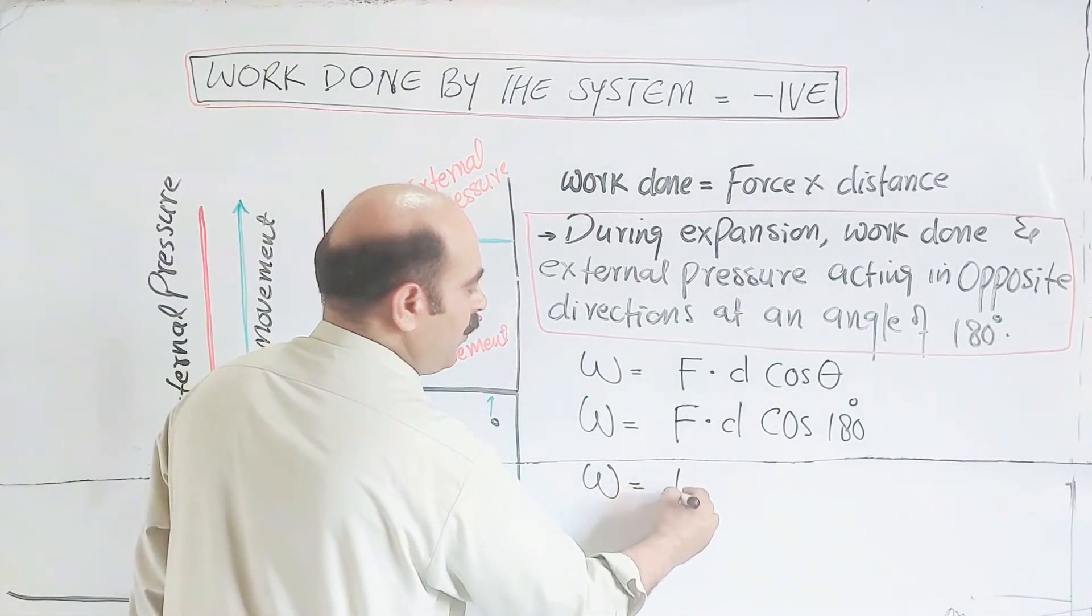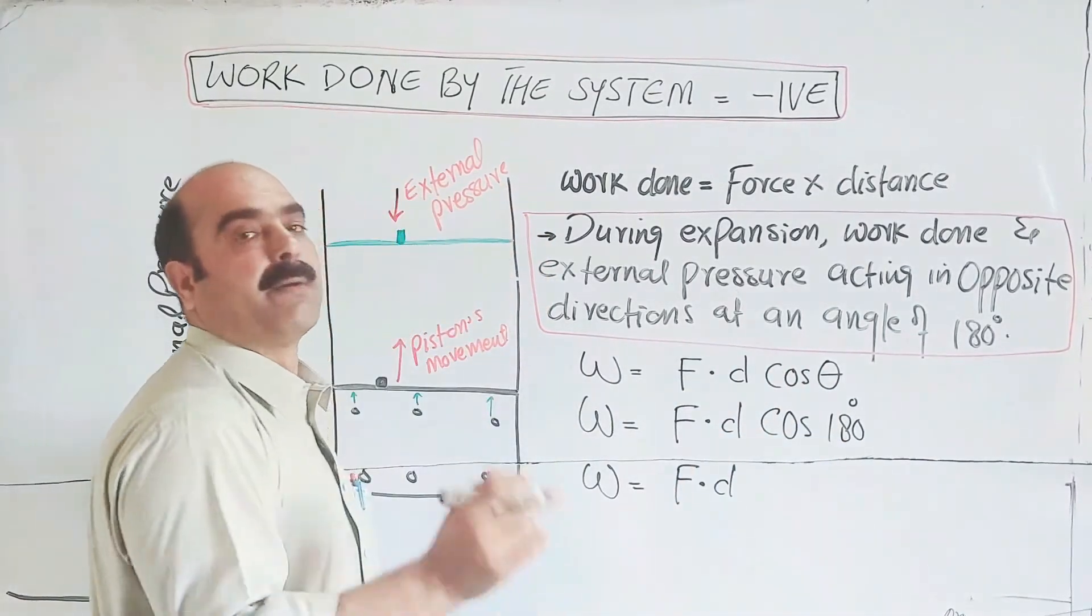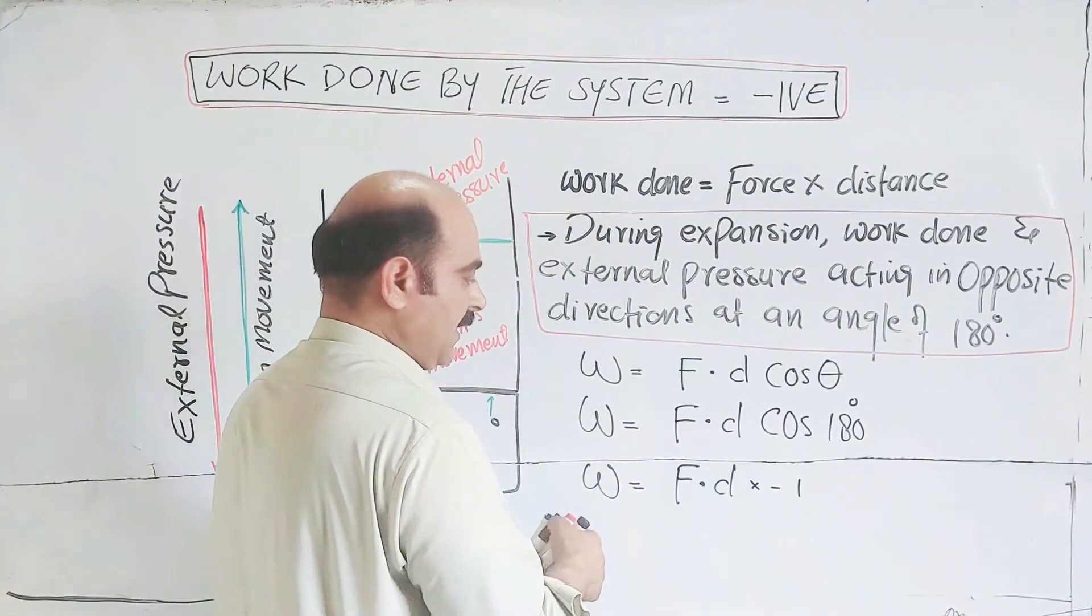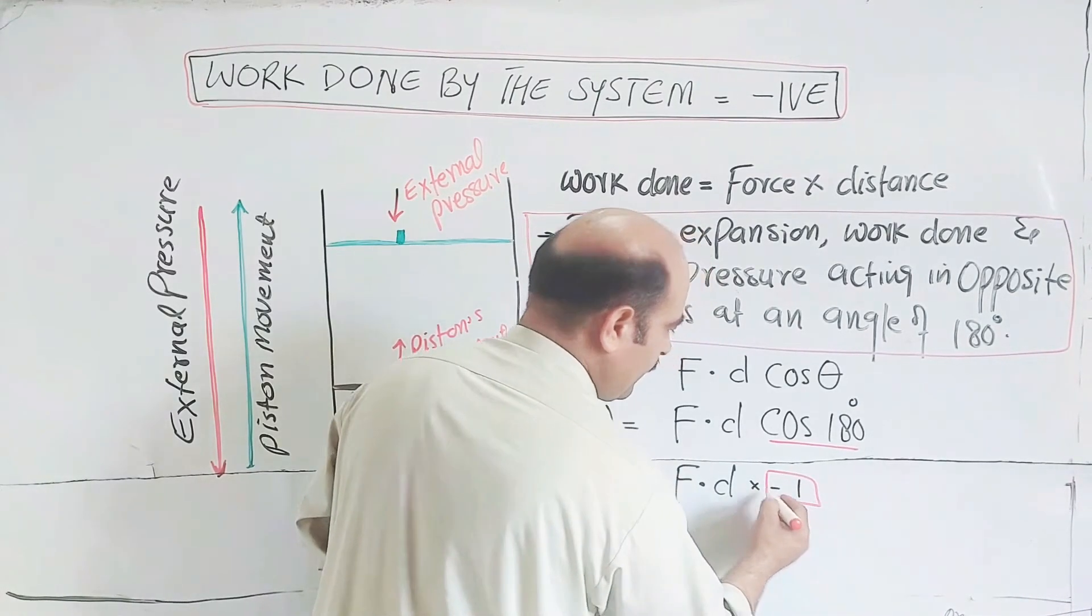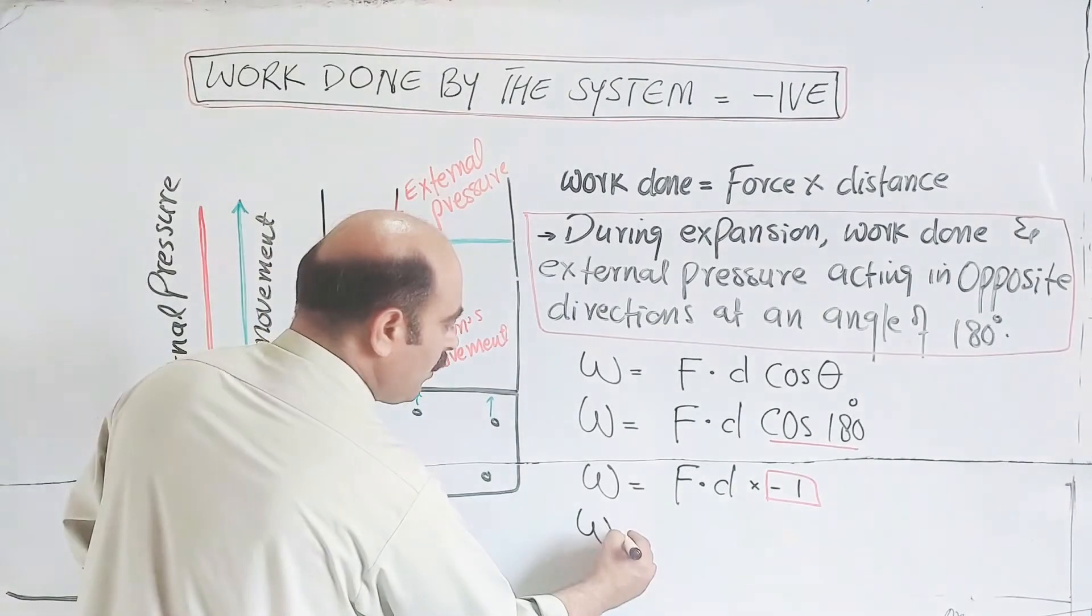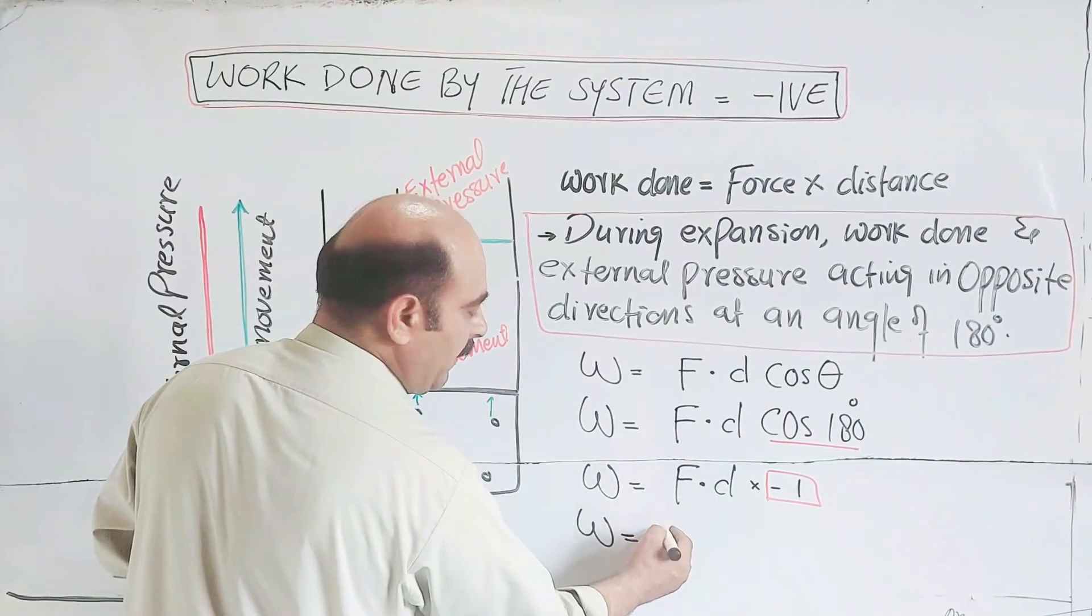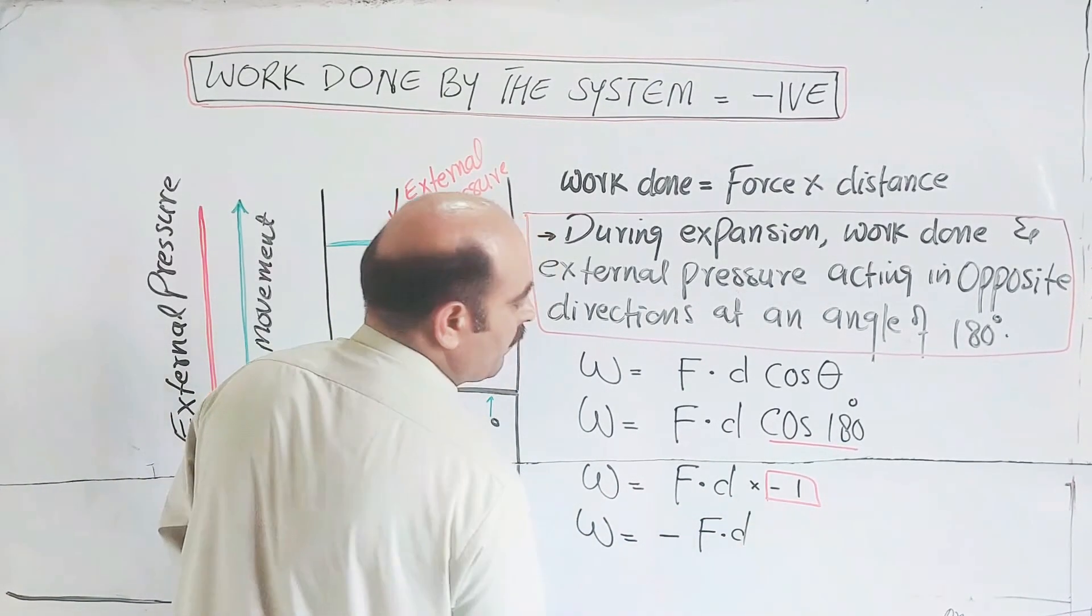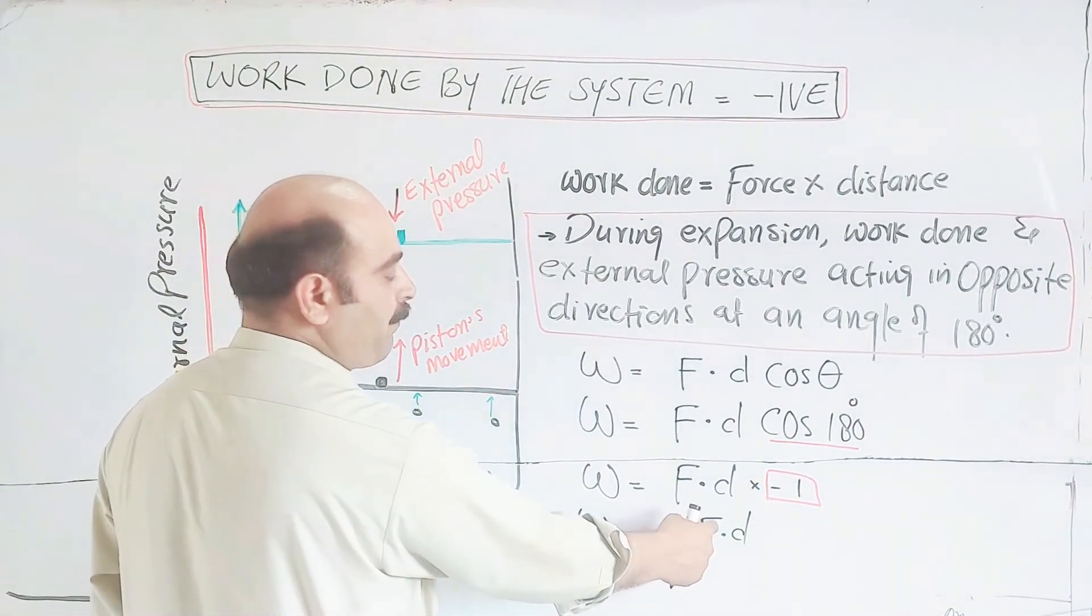W is equal to F times D times cos 180. Cos 180 is minus one. Multiply by minus one. Cos 180 is minus one. So W is equal to minus F times D. We use this minus sign.